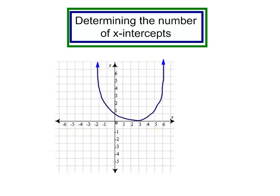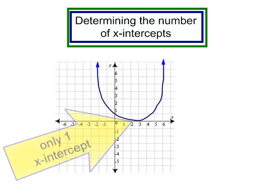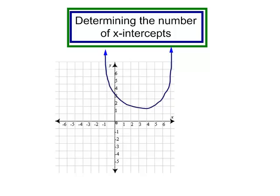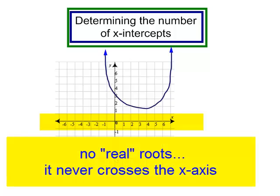It may come down, touch it, and turn around. In this case, I will only have one real answer, or it may never cross the x-axis, which means that I have no real roots.